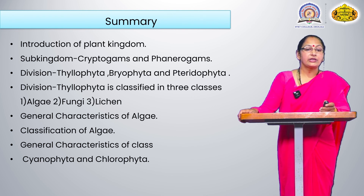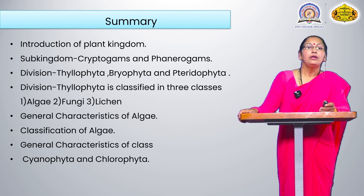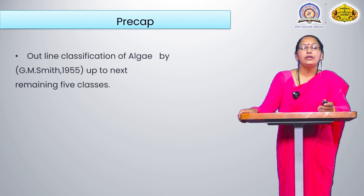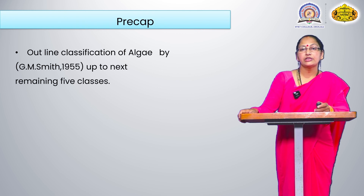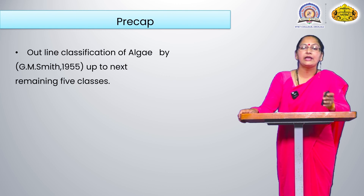Particular focus on the classification of algae derived by G.M. Smith in 1955. We saw the general characteristics of Cyanophyta and Chlorophyta. In the next lecture, we will see the outline classification of algae by G.M. Smith for the remaining five classes. Today we covered two classes — Cyanophyta and Chlorophyta. Thank you, bye bye everyone!